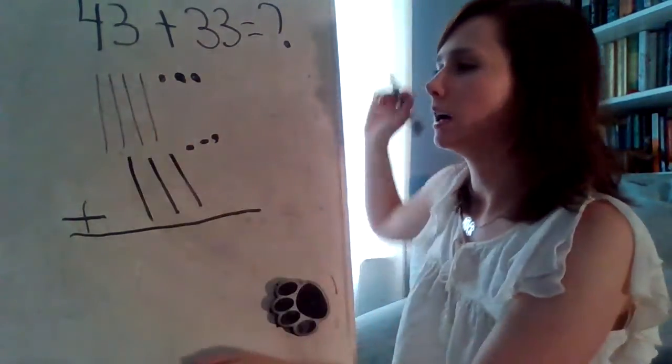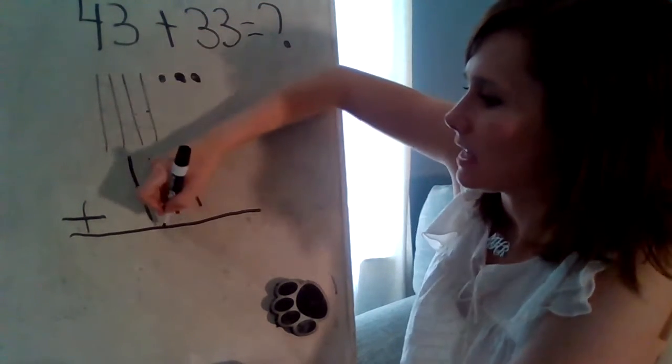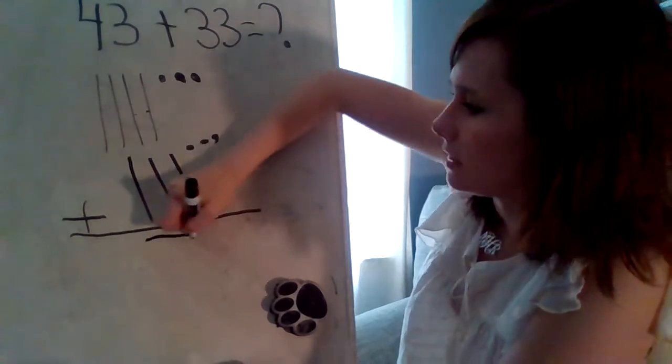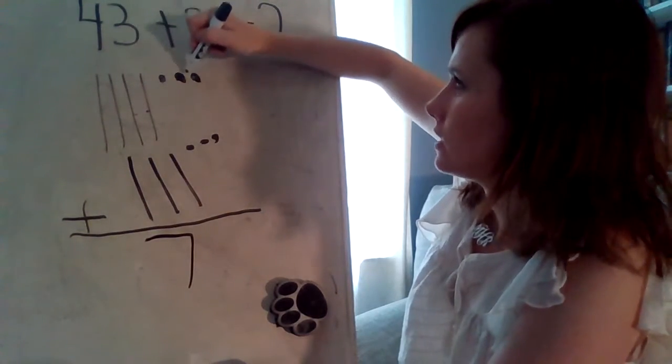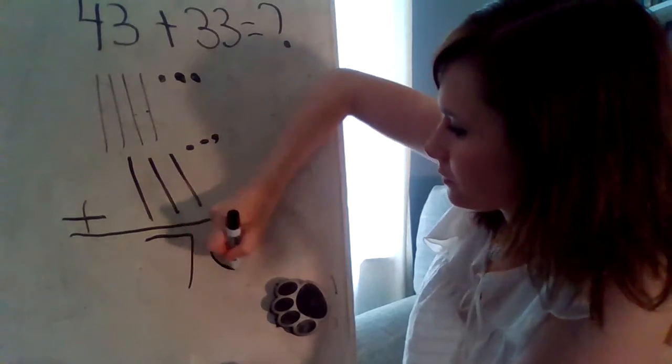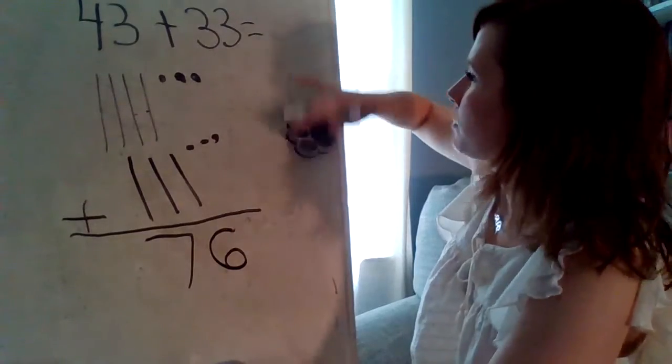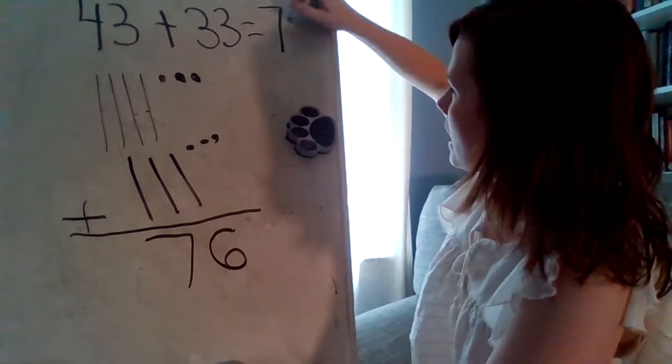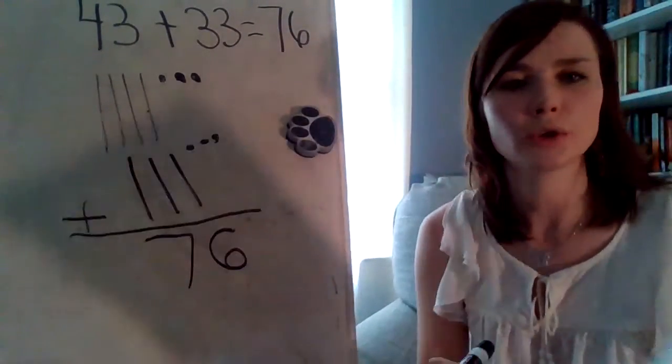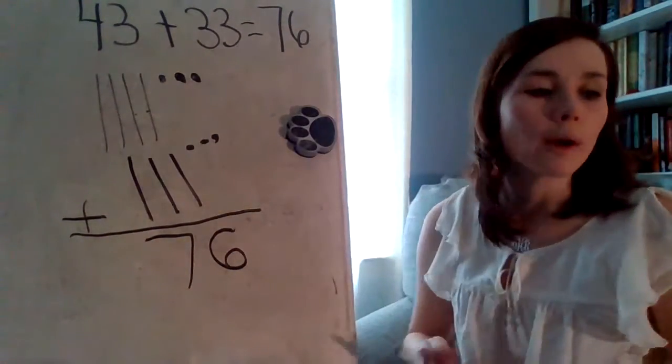All right. Let's count. Let's skip count our quick tens. 10, 20, 30, 40, 50, 60, 70. Then we'll have 70, 71, 72, 73, 74, 75, 76. 76 is our sum, our mystery number. And you can fill that in right on your worksheet.